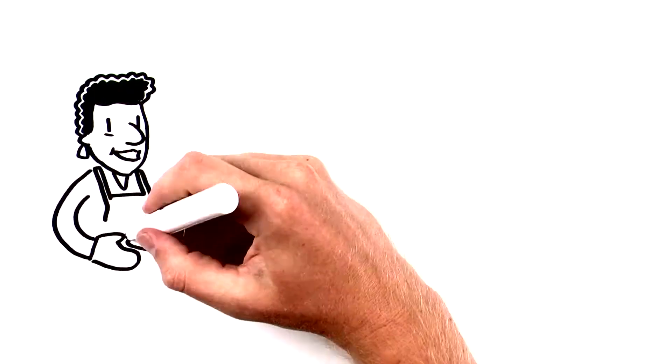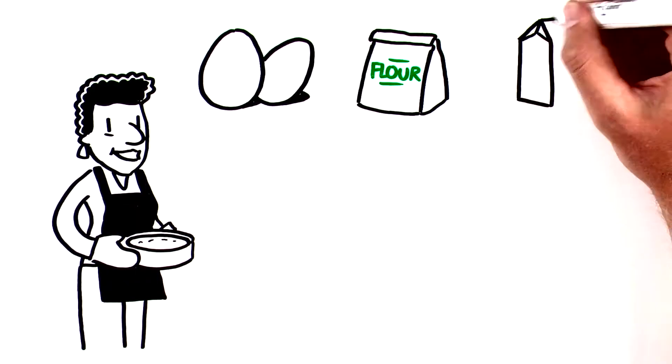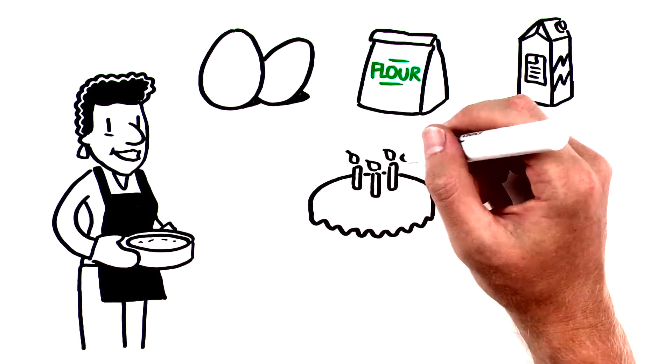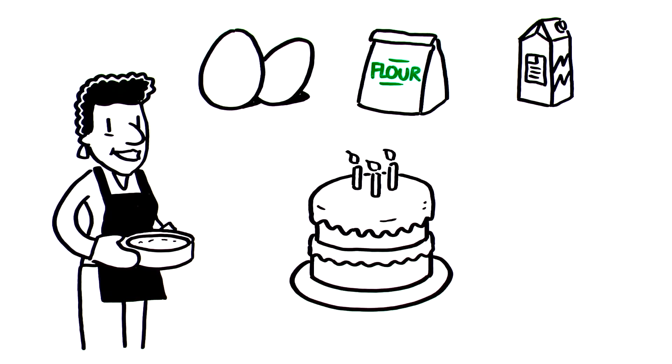It's like baking a cake, you take eggs and flour and other ingredients and mix them together. Once they're baked you have the finished product but you no longer have the individual ingredients.